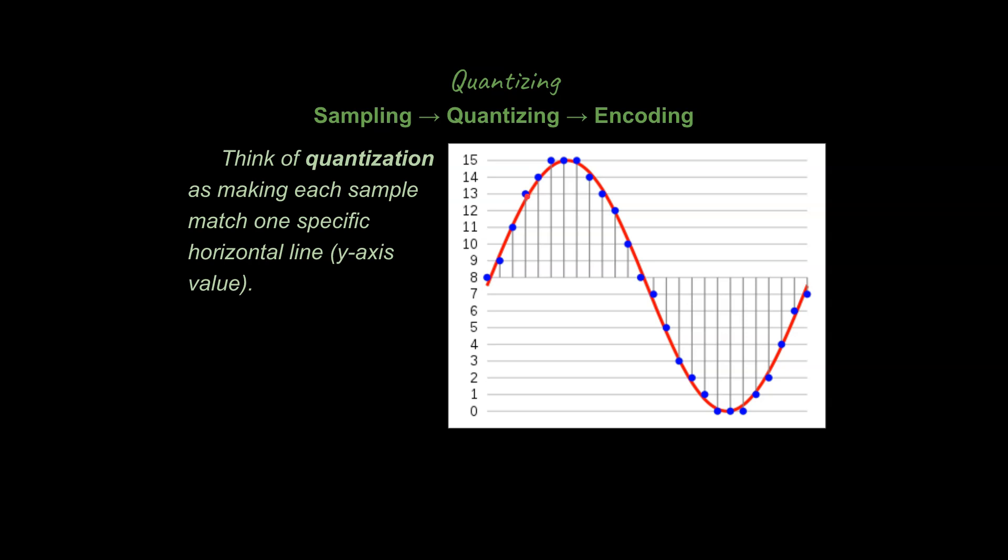And that's because we're quantizing the data. So we're going to round off the analog value to a specific number. And that's what we mean by quantizing. We're going to make each sample match one specific horizontal line. So a y-axis value. So if we can get full numbers here, here you've got a range between zero and 15.